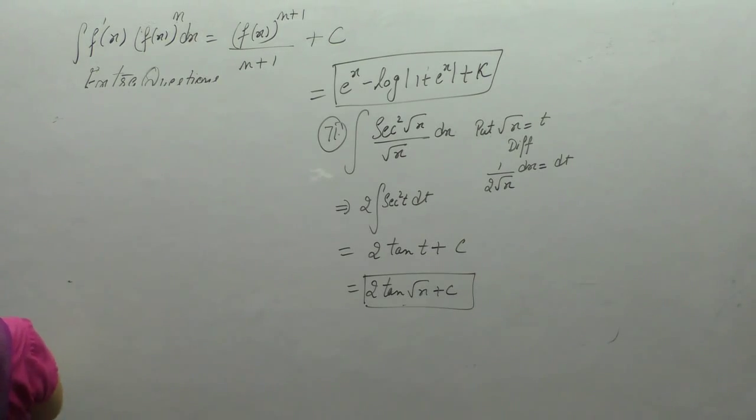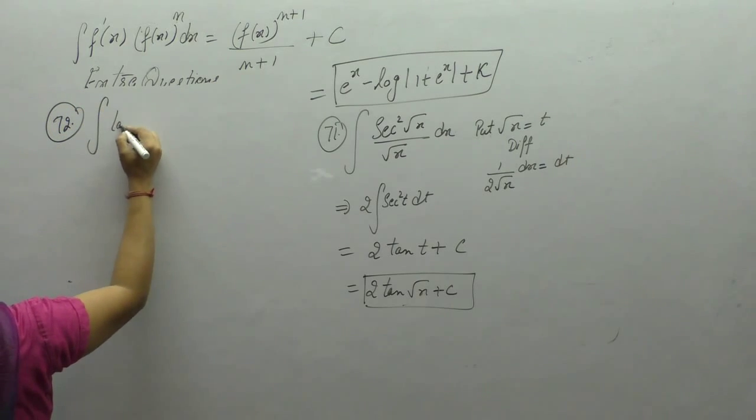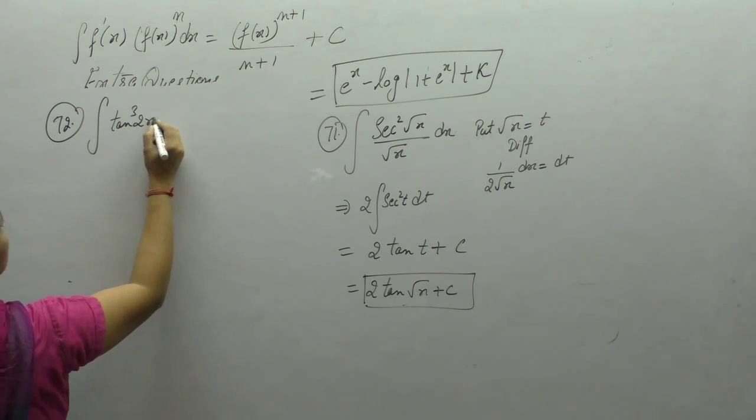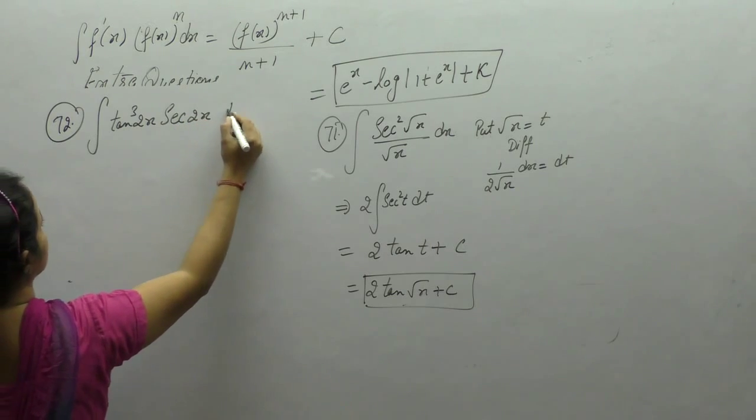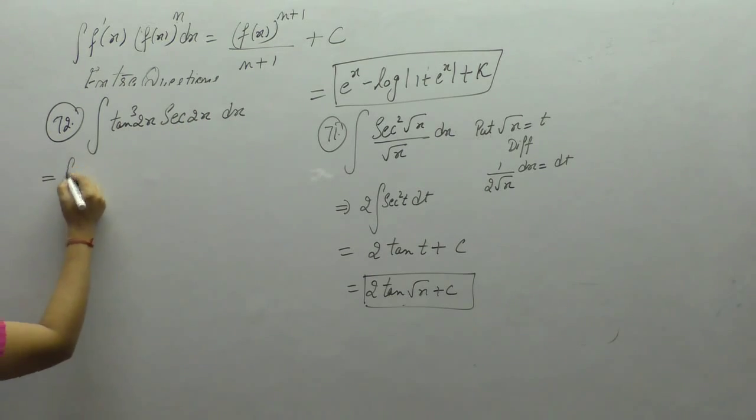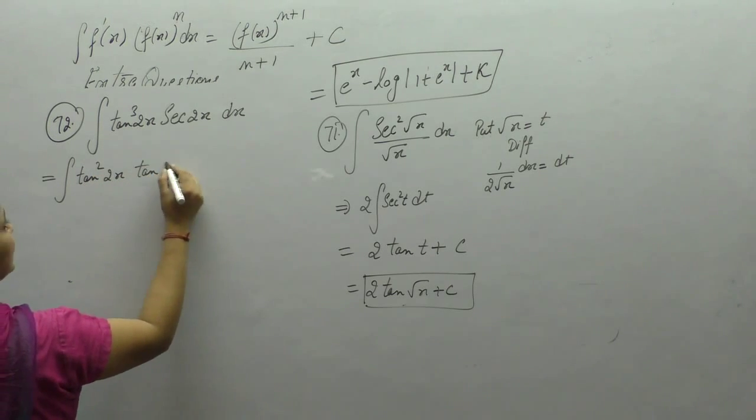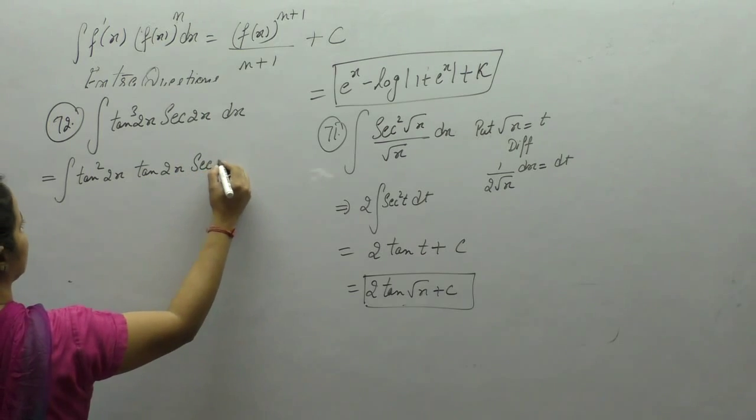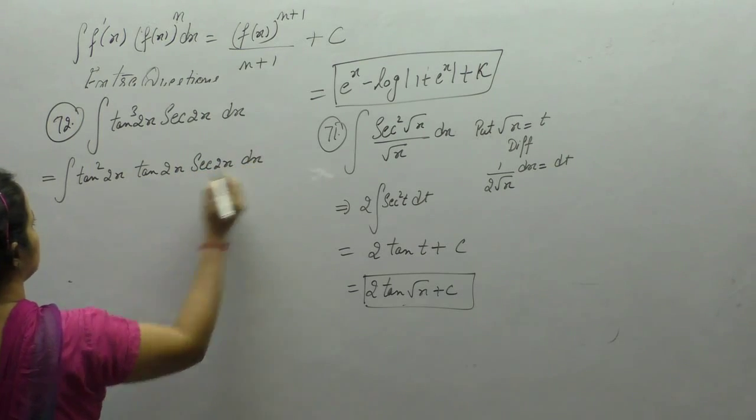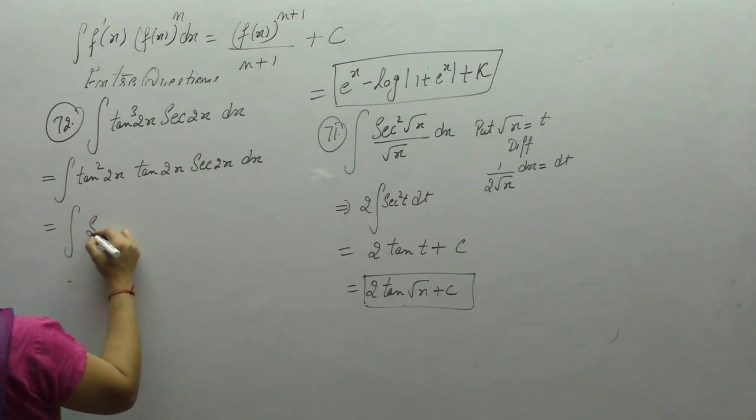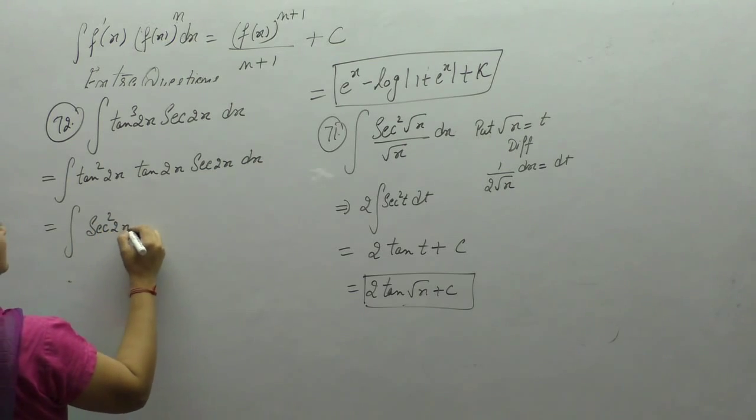Next is integration of tan cube 2x sec 2x dx. Write tan cube as tan squared into tan 2x times sec 2x. Now we use the identity: tan squared x is sec squared x minus 1.